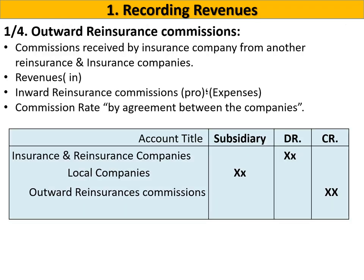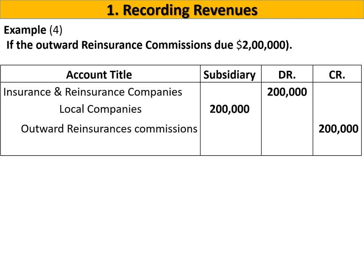For the commission entry, debit insurance and reinsurance companies with the local company name as subsidiary, and credit outward reinsurance commission. For example, if the outward reinsurance commission due is two hundred thousand dollars, apply the entry directly as described.